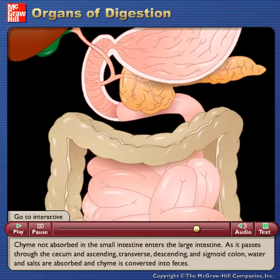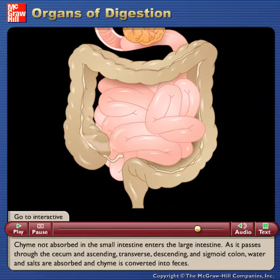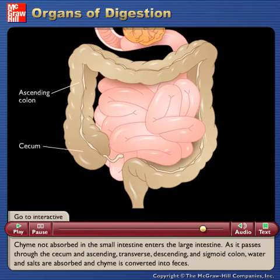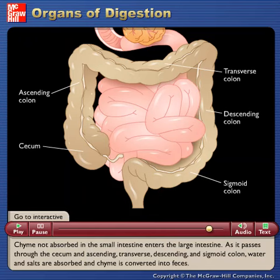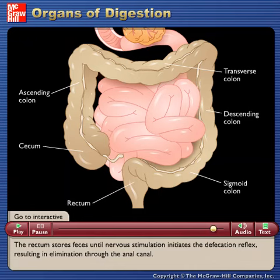Chyme not absorbed in the small intestine enters the large intestine. As it passes through the cecum and ascending, transverse, descending, and sigmoid colon, water and salts are absorbed and chyme is converted into feces. The rectum stores feces until nervous stimulation initiates the defecation reflex, resulting in elimination through the anal canal.